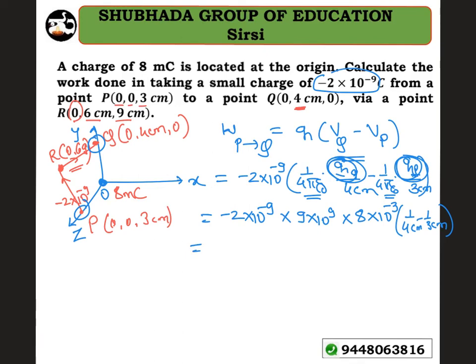Simplifying this expression gives 12 into 10 to the power of minus 1, which equals 1.2 joules. So the work done is 1.2 joules. The potential at Q equals 1 divided by 4 pi epsilon naught into the charge.